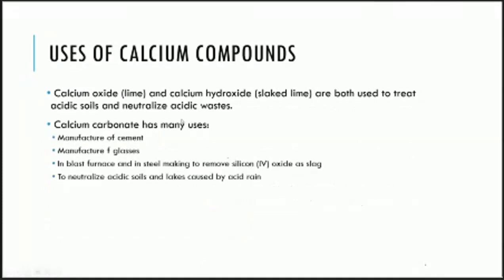The uses of calcium compounds: calcium oxide (lime) and calcium hydroxide are both used to treat acidic soils and neutralize acidic wastes because of their properties as bases. Calcium carbonate has various uses: the manufacture of cement, the manufacture of glass, in a blast furnace and steel making to remove silicon oxide as slag, and to neutralize acidic soils and lakes caused by acid rain. These are all common uses of calcium carbonate.